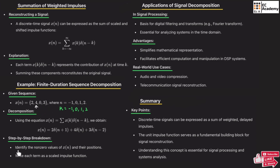The steps are: first, identify the non-zero values of x(n) and their positions. Then write each term as a scaled impulse function. After identifying each position, we write the given sequence in the form of impulse functions.